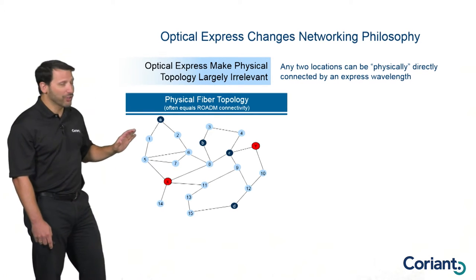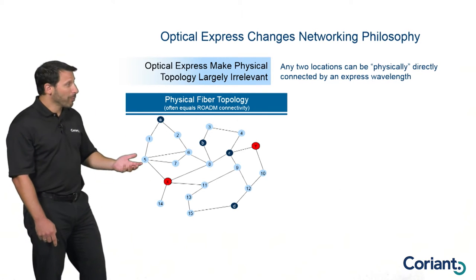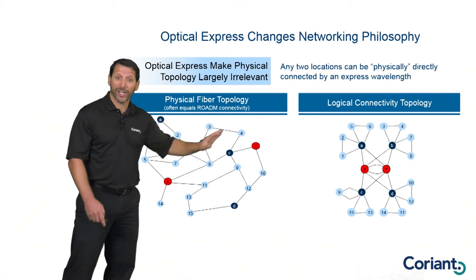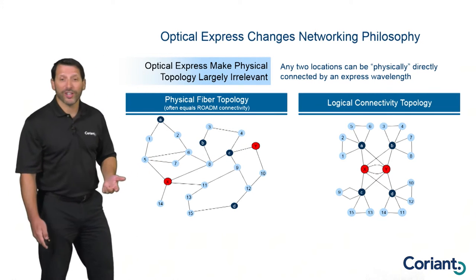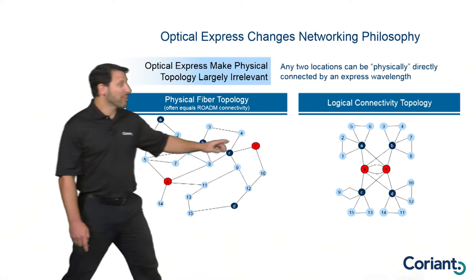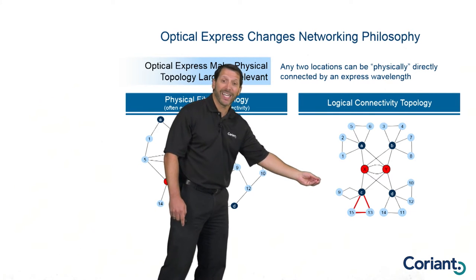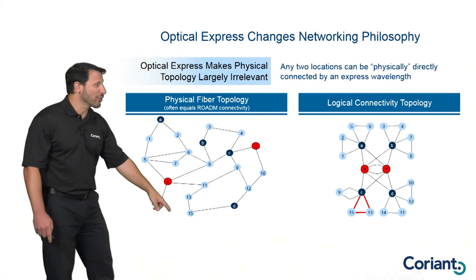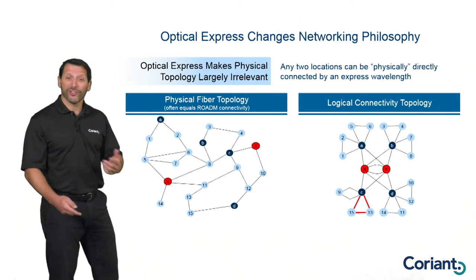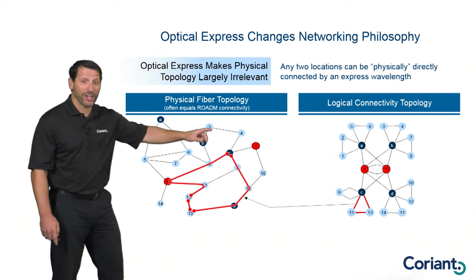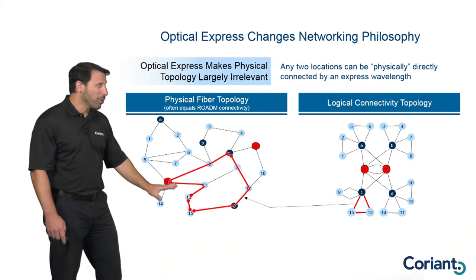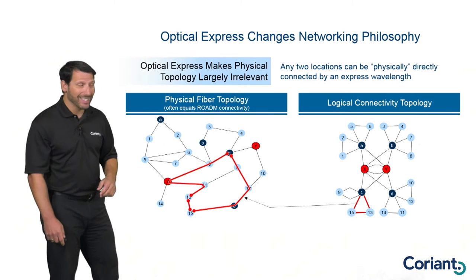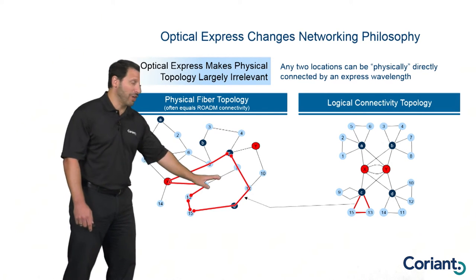With a complex physical topology — a spider web of connections — what you really want is a logical topology with a couple of hub and aggregation nodes. This becomes a trivial exercise in a network with Optical Express. For example, if I want to connect locations 13, 15, and C, and aggregate 15 and 13 onto C — even though 13 and 15 are physically far from C — I can just plug in the equipment at 15 and 13, optically express that back to C, and they are now all directly connected. It takes virtually no operational effort and costs almost nothing at the intermediate locations.